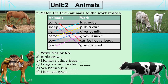Now let's look at question number three: write yes or no. There are sentences A, B, C, D, and E. Read each sentence and write 'yes' if it is correct or 'no' if it is incorrect. First sentence: 'Birds crawl.' No — insects crawl, not birds. Birds can fly because a bird has feathers and two wings. Birds cannot crawl; they can walk and fly.